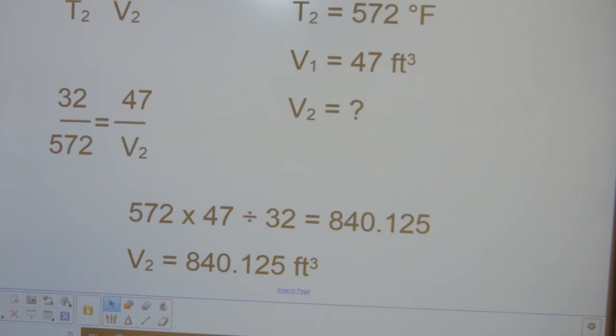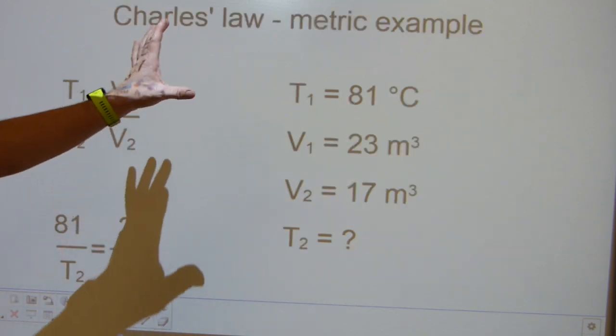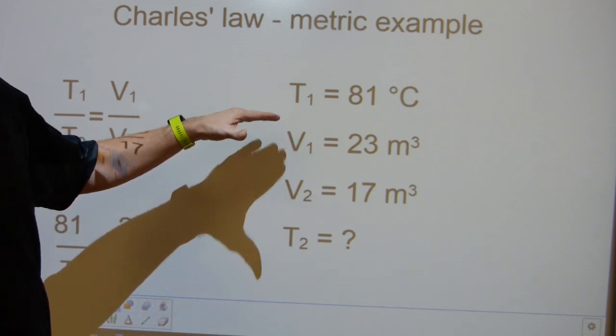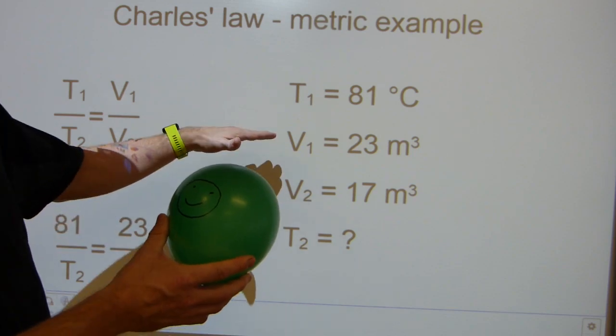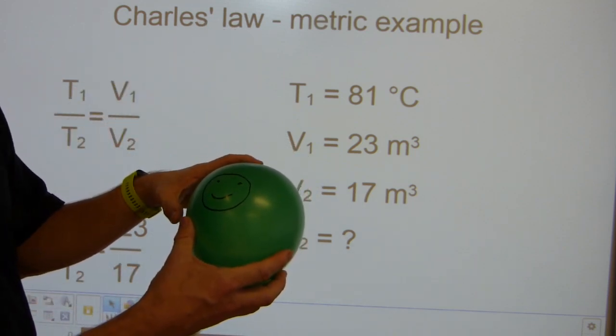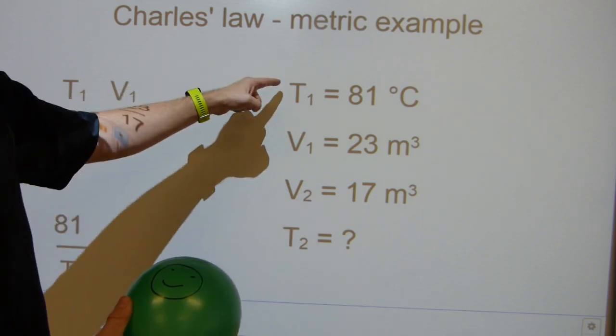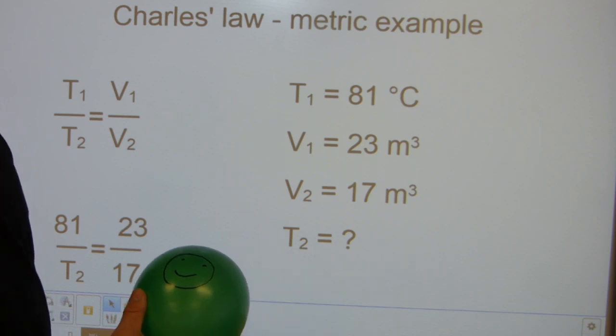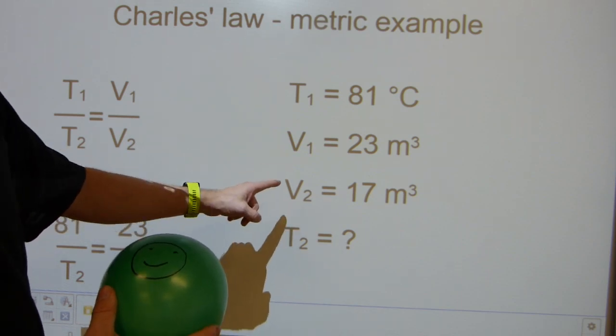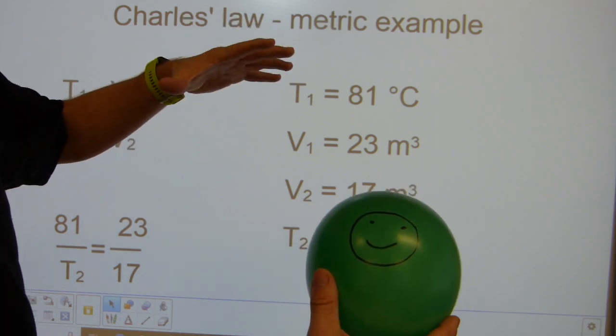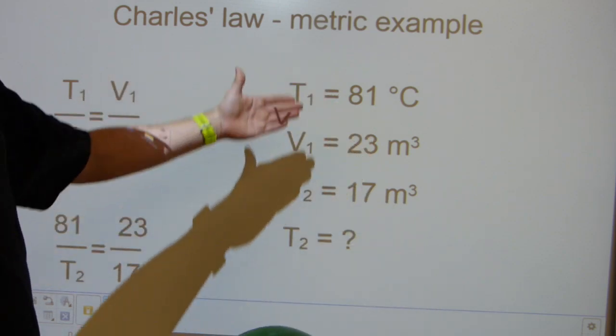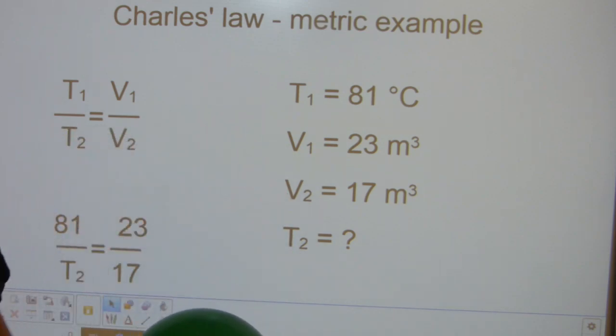Let's look at a metric version where the volume is given and the temperature is to be calculated. V1 is 23 cubic meters, that's your starter volume, and its volume goes down to 17. You start big, 23, and it goes down to 17 cubic meters. T1 is 81 degrees. What's going to be T2, the temperature that corresponds to this lesser volume? You start with a bigger volume at 81 degrees. When the volume goes down, it's expected that you're going to have a temperature that's lower.